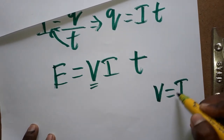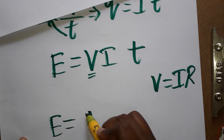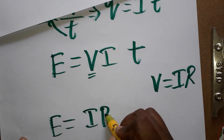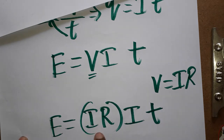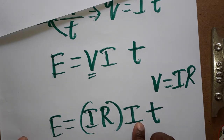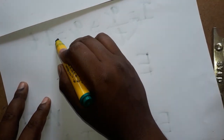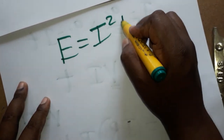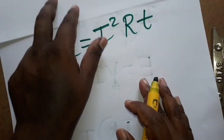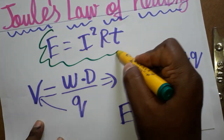According to Ohm's Law, V is equal to I R. Substituting, energy is equal to I R into I T, so I squared will come out. Energy is equal to I squared R T.